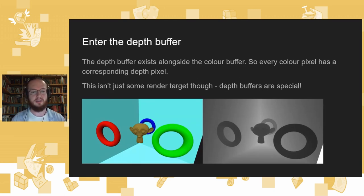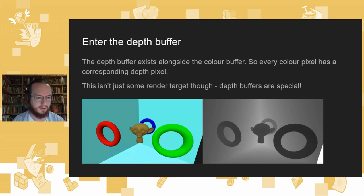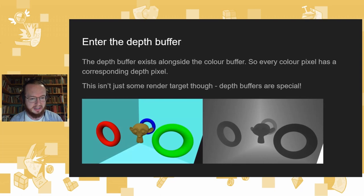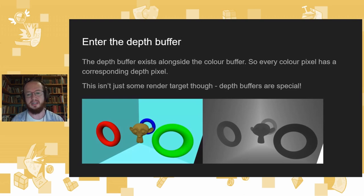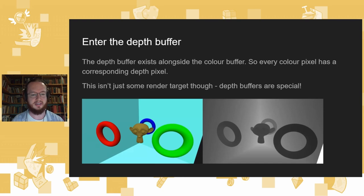Each depth pixel represents the distance from that pixel to the camera. You can see this little demo scene: we've got Suzanne the monkey in the middle, and these three tori. On the right, you can see the darker pixels are the ones closer to the camera — the lighter it gets, the further away that pixel is.